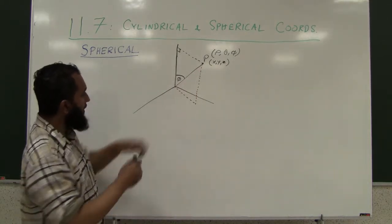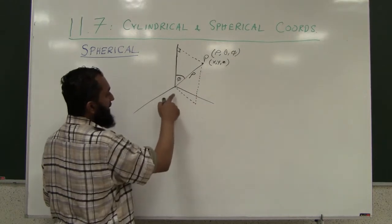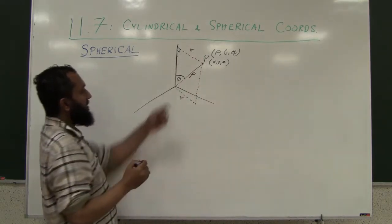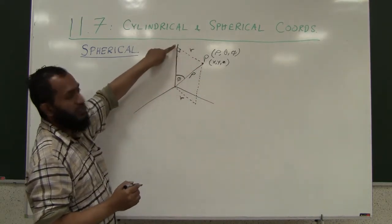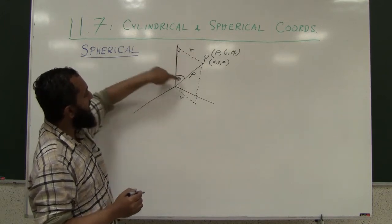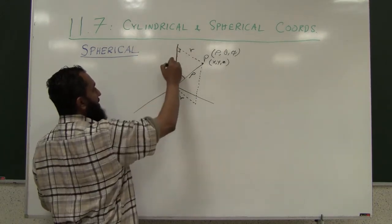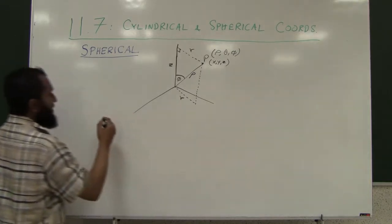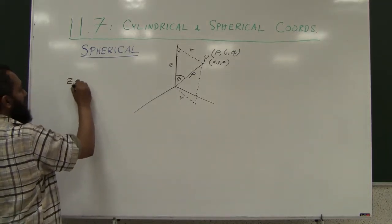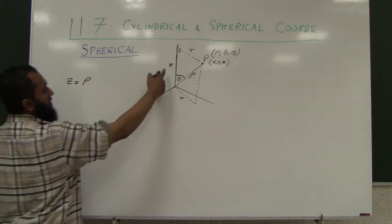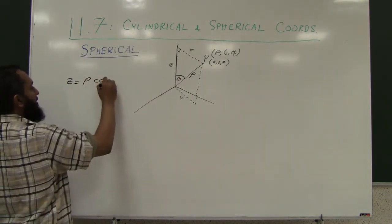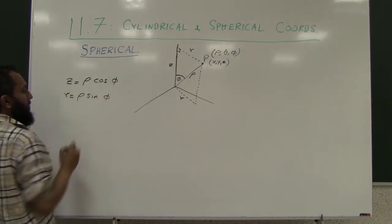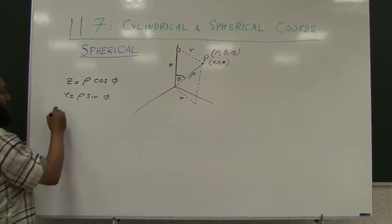Rho is the length of this line segment. And then R is the perpendicular distance directly to the Z axis. This makes a right angle triangle where the height is Z. So from this right triangle, Z is the side adjacent to phi, giving Z equals rho cosine phi, and R equals rho sine phi.